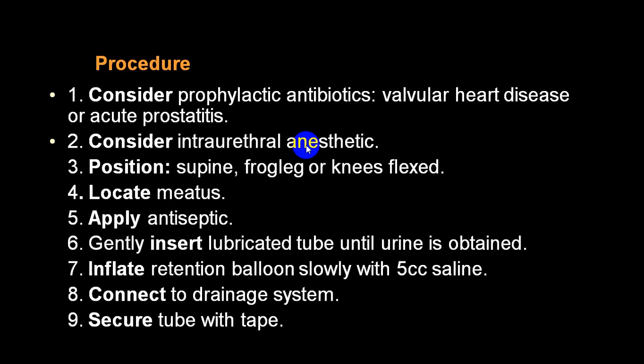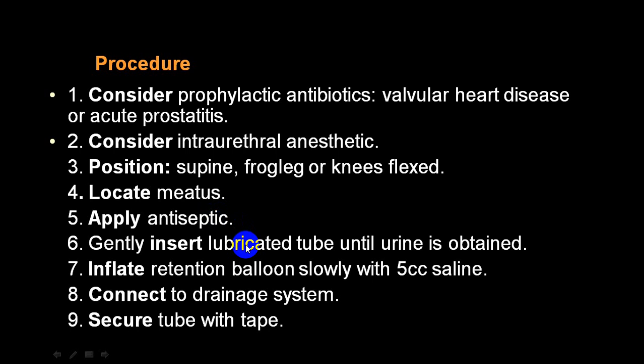Consider prophylactic antibiotics, ideally only if the person has valvular heart disease or suspected acute prostatitis. Consider intra-urethral anesthetic such as lignocaine. For positioning: in males, supine position is adequate; in females, frog-leg (knee-flexed) or lithotomy position is required. Locate the meatus, apply antiseptics, gently insert lubrication, and insert the catheter until urine is obtained. Inflate the retention balloon slowly with 5–10 ml of saline, then connect to the drainage system and secure the tube.